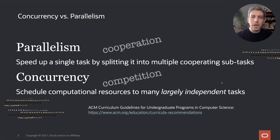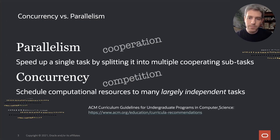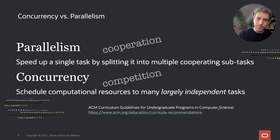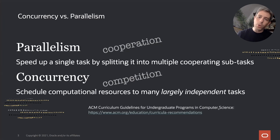Project Loom, on the other hand, addresses concurrency, which is the problem of scheduling many mostly independent tasks that compete over resources. A prime example of that is a server that needs to serve many requests that arrive at a fast rate, and because handling each request takes up a bit of time, they end up concurrently competing over the server's resources.